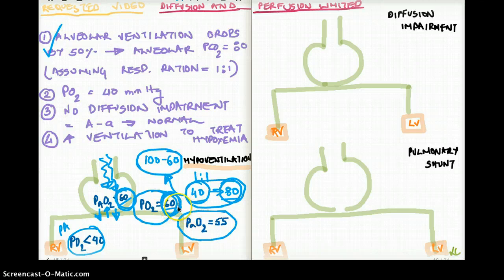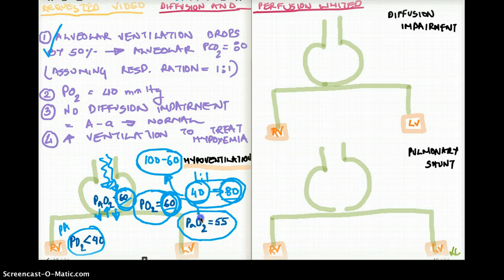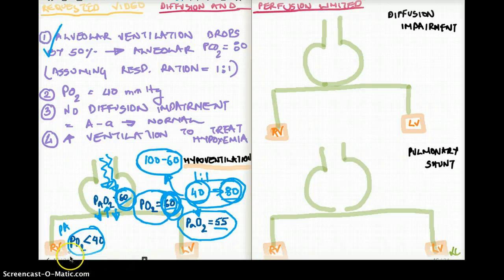The same equalization is going to happen, provided there are no other pathologies. When these capillaries reach systemic circulation, the value is going to drop by five. So 60 becomes 55, just like in our normal state. That is our hypoventilation summary.